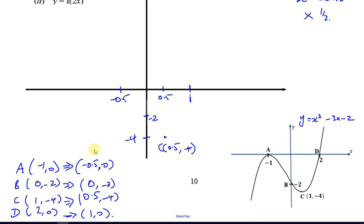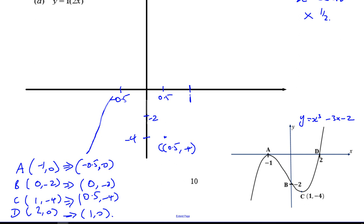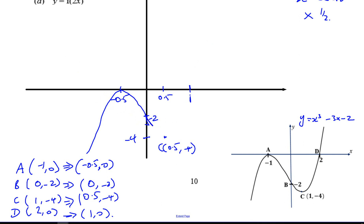The curve will look like this — it's exactly the same type of shape but squashed up. It comes from below, turns, crosses at minus two, turns again, and goes up. It's a cubic curve compressed horizontally — that's y equals f of 2x.